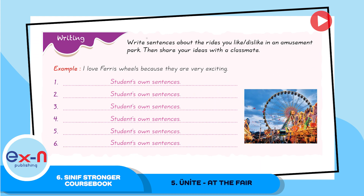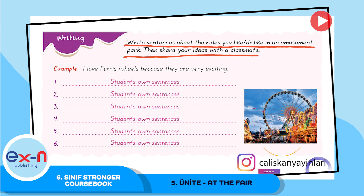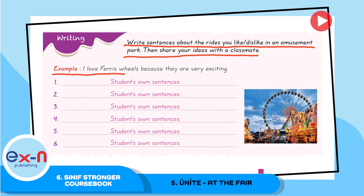Another writing activity: write sentences about the rides you like or dislike in an amusement park, then share your ideas with a classmate. For example, you can write: I love Ferris wheels because they are very exciting.